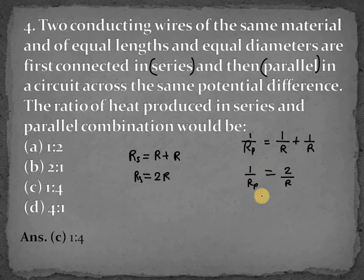1 over Rp equals 2 over R. When we cross multiply, we get Rp as R over 2. So now we have Rs as 2R and Rp as R over 2.